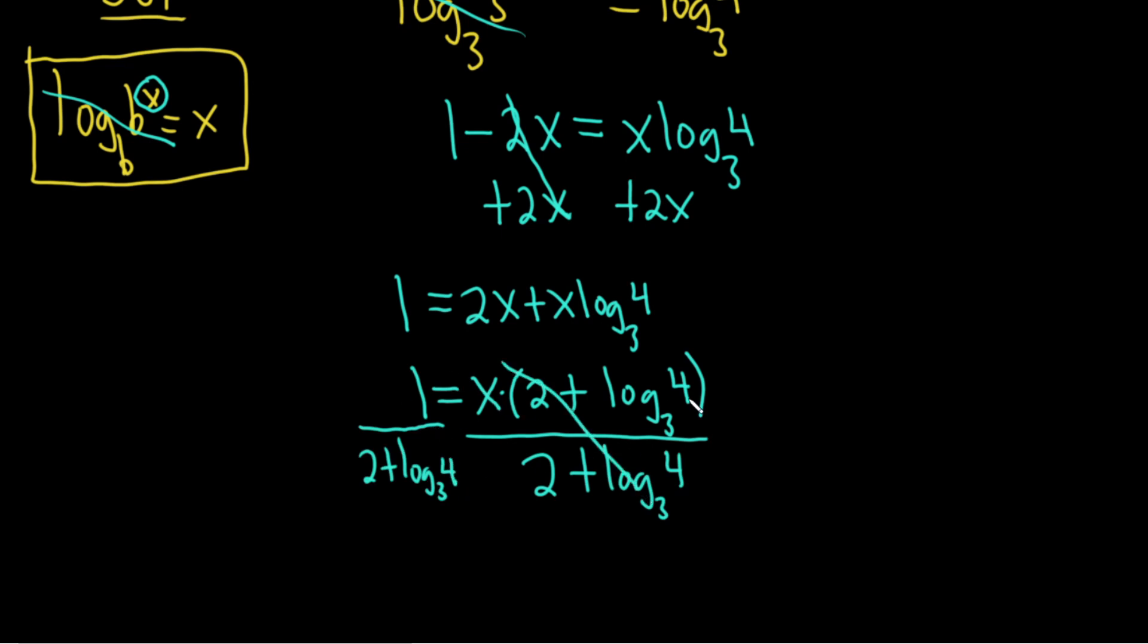So x is equal to all of this stuff over here. Let me just write it again over here. So this is 1 over 2 plus log base 3 of 4. And so this would be the solution to this equation.